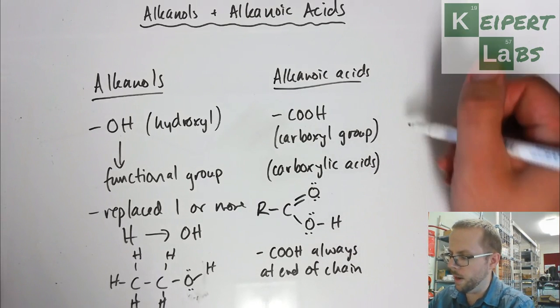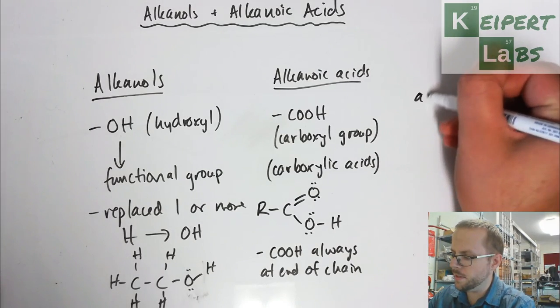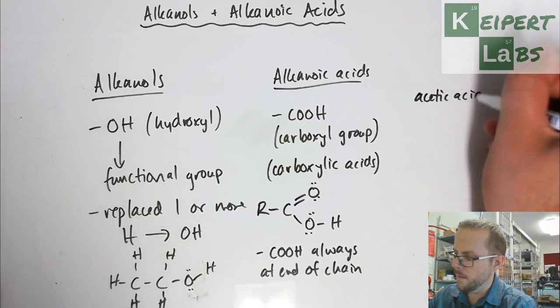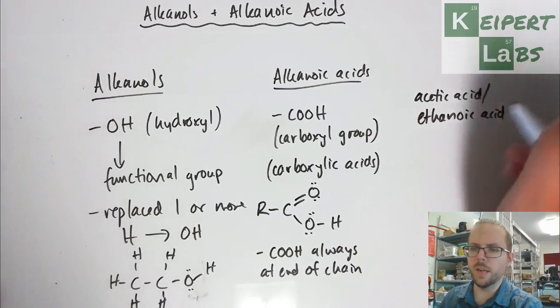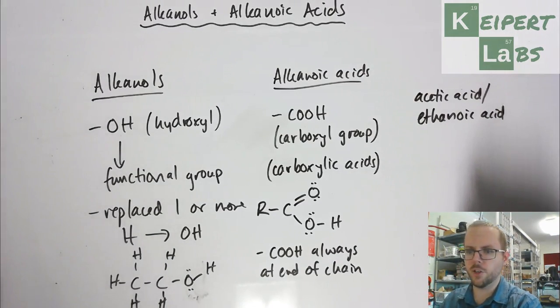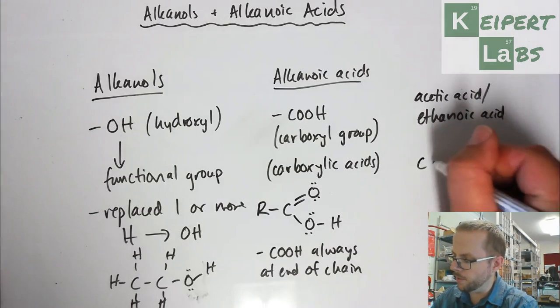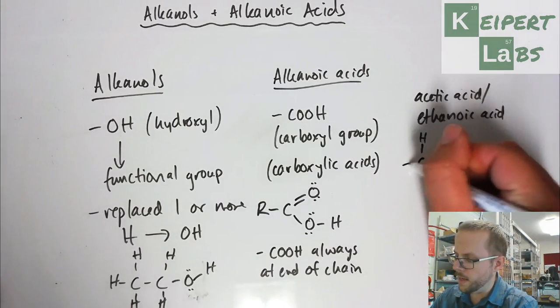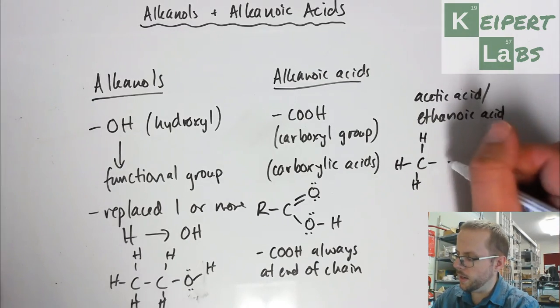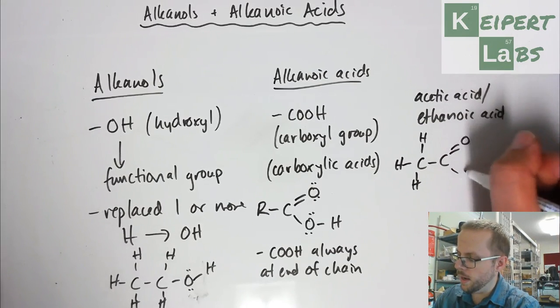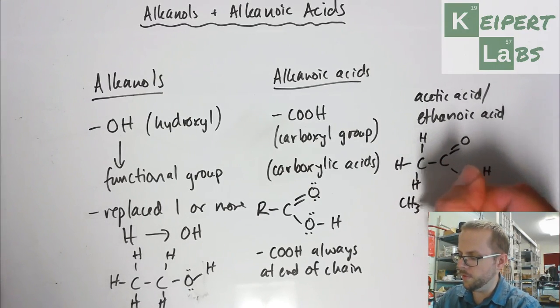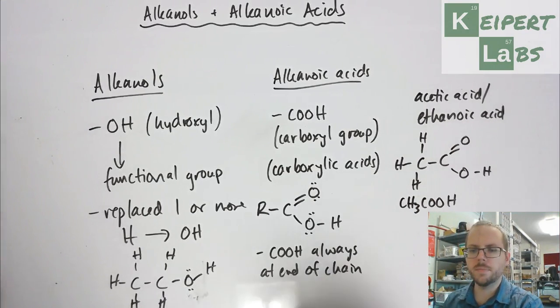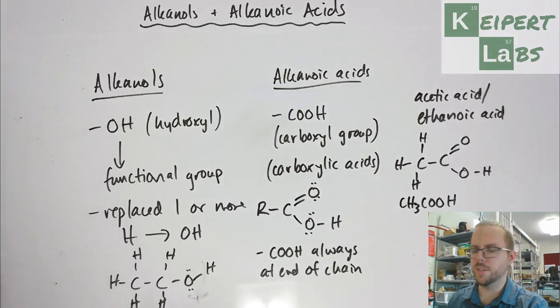An example that we might have would be acetic acid, or ethanoic acid as it's more technically known, but less commonly known in actual chemistry circles. You'd have a carbon with three hydrogens and this group there. To write its molecular formula, we would write it like that, CH3COOH. It's something that you would have seen before.